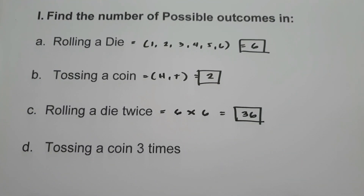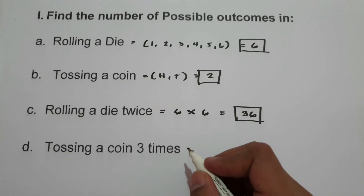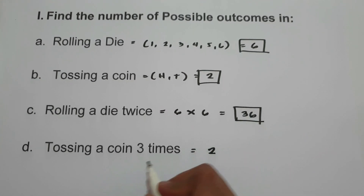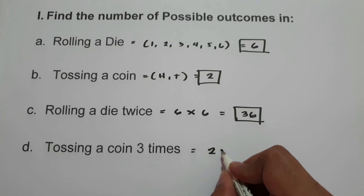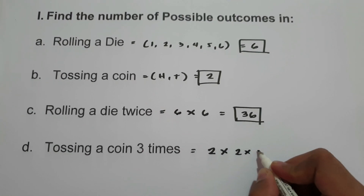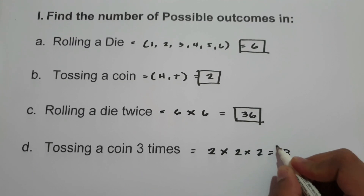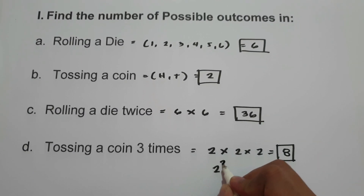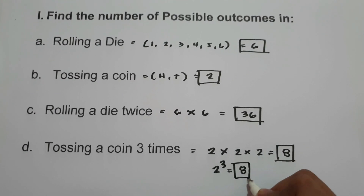On letter D, tossing a coin 3 times. If we toss a coin we have 2 outcomes, and since we are tossing a coin 3 times, that is 2 times 2 times 2, which is 8. Or we can write it as 2 raised to 3, which is also 8. This will be our answer.